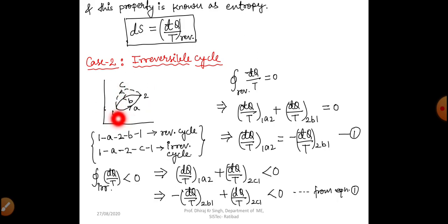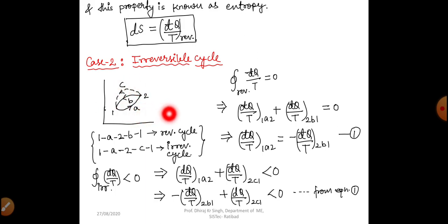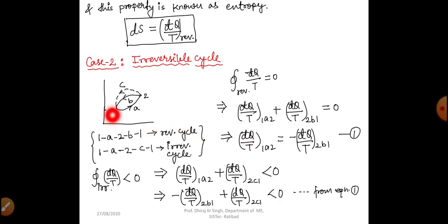There are two cycles: 1A2B1 (reversible) and 1A2C1 (irreversible), because one of its processes is irreversible — and if any one process in a cycle is irreversible, the whole cycle is treated as irreversible. For the reversible cycle: ∫δq/T from 1A2 + ∫δq/T from 2B1 = 0, so ∫δq/T from 1A2 = −∫δq/T from 2B1 … (equation 1).